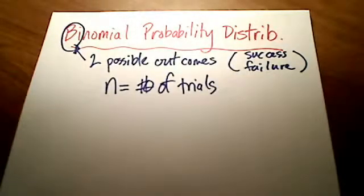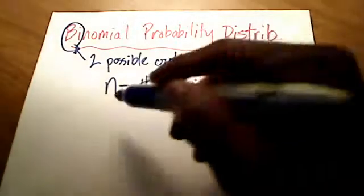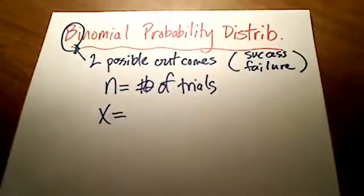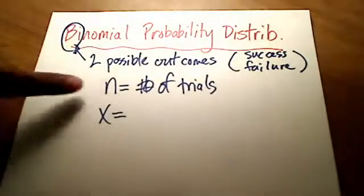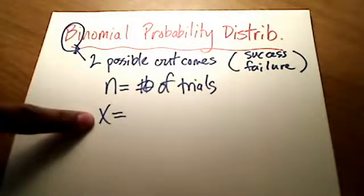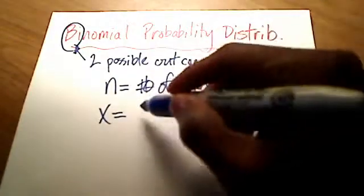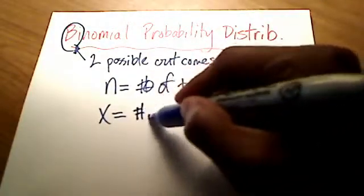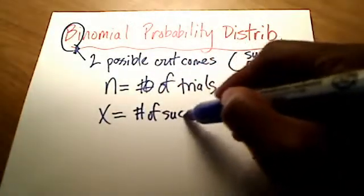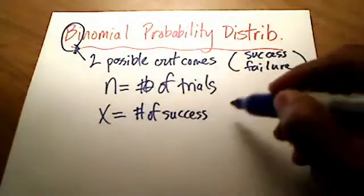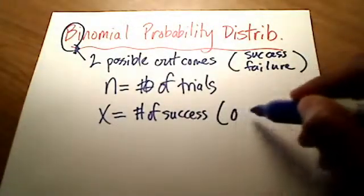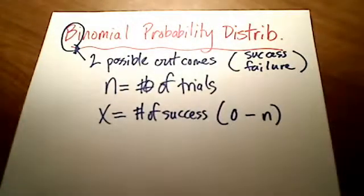The other thing of interest is x. Now what's x going to represent? x is going to represent the number of times that I succeed, that I actually have some success. So x is going to represent the number of successes, and that's going to be any number between 0 and n.